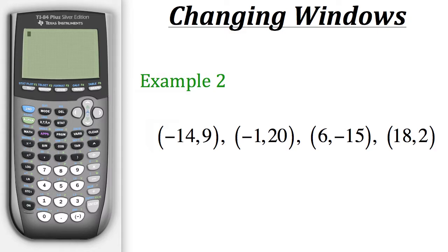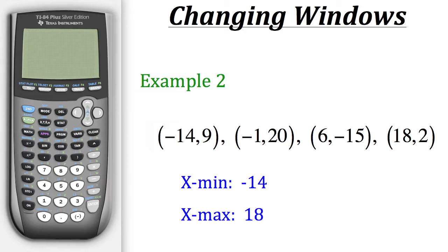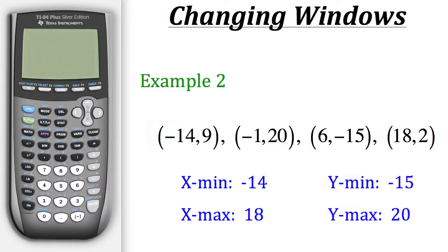Before plotting these points, let's find the lowest and highest x values, then do the same for the y values. The lowest x value from our four points is negative 14, so x min is negative 14. The highest x value is 18, so x max is 18. The lowest y value is negative 15, so y min is negative 15. The highest y value is 20, so y max is 20.